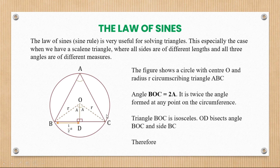The figure shows a circle with center O and radius R, circumscribing triangle ABC. Angle BOC is equal to 2A, as you can already see. It is twice the angle formed at any point on the circumference — so it's twice this angle here, and this angle here, and this angle here.